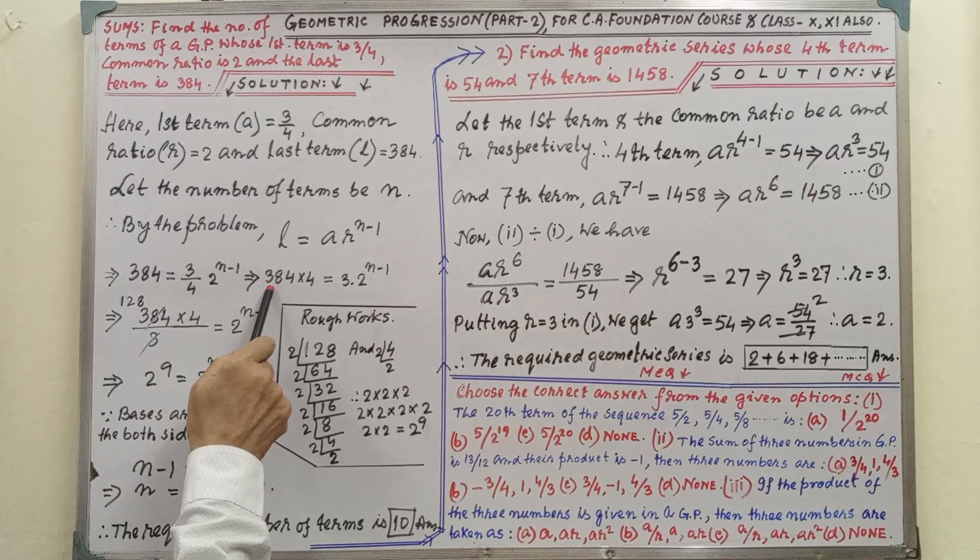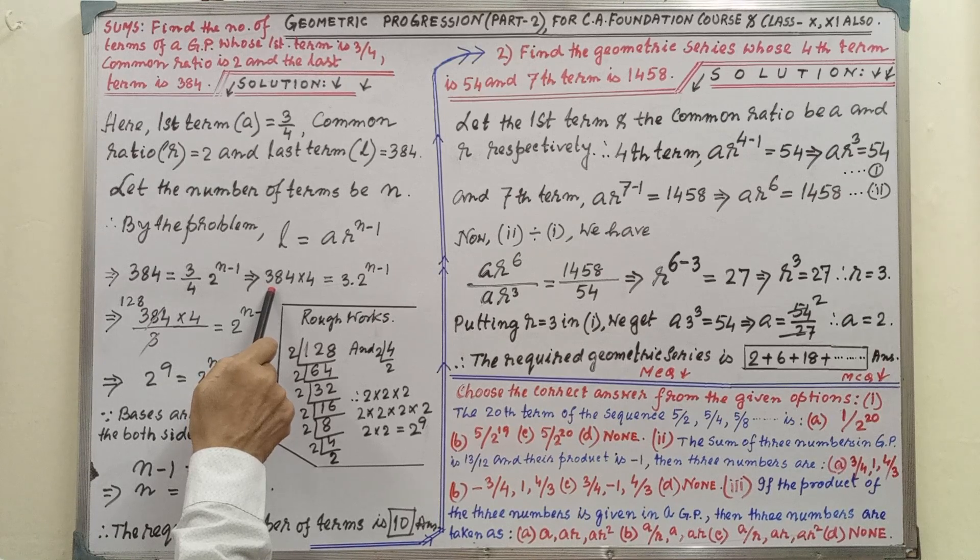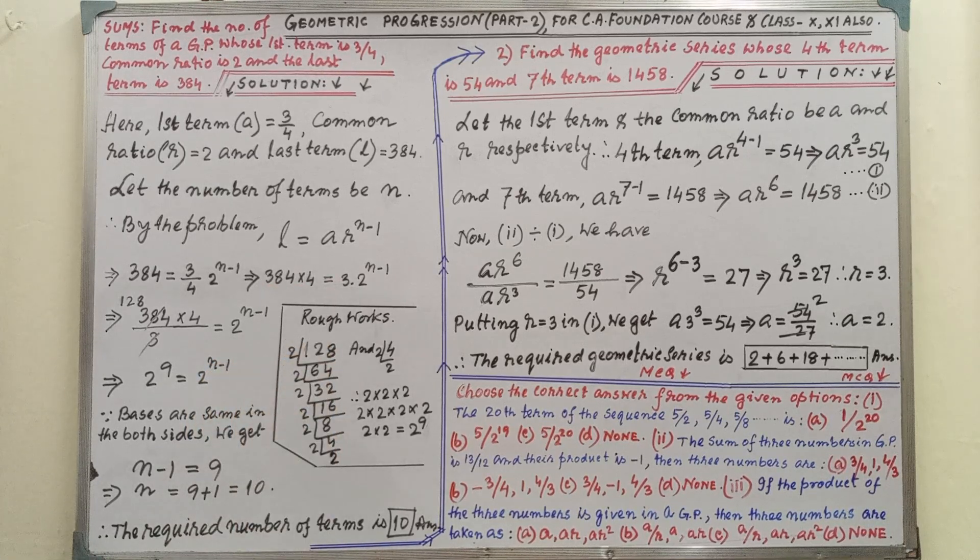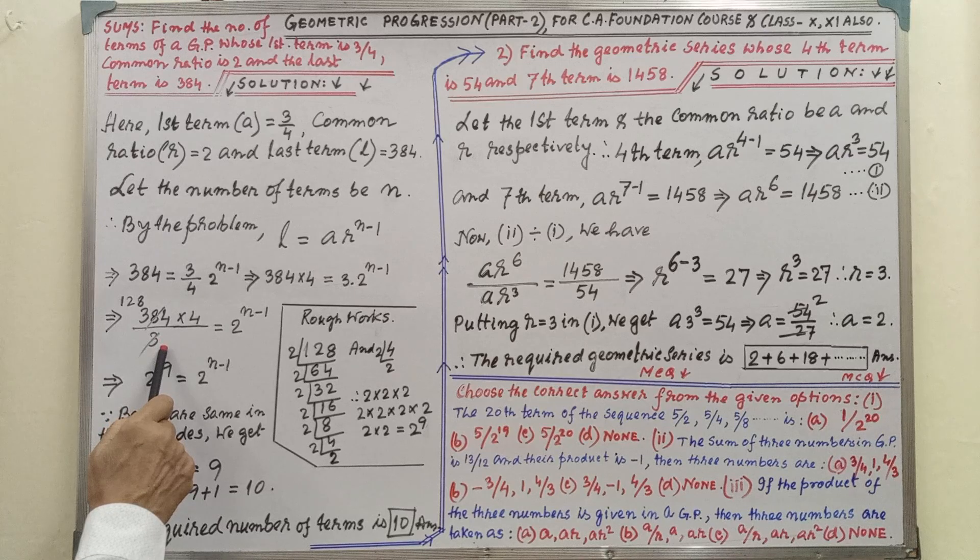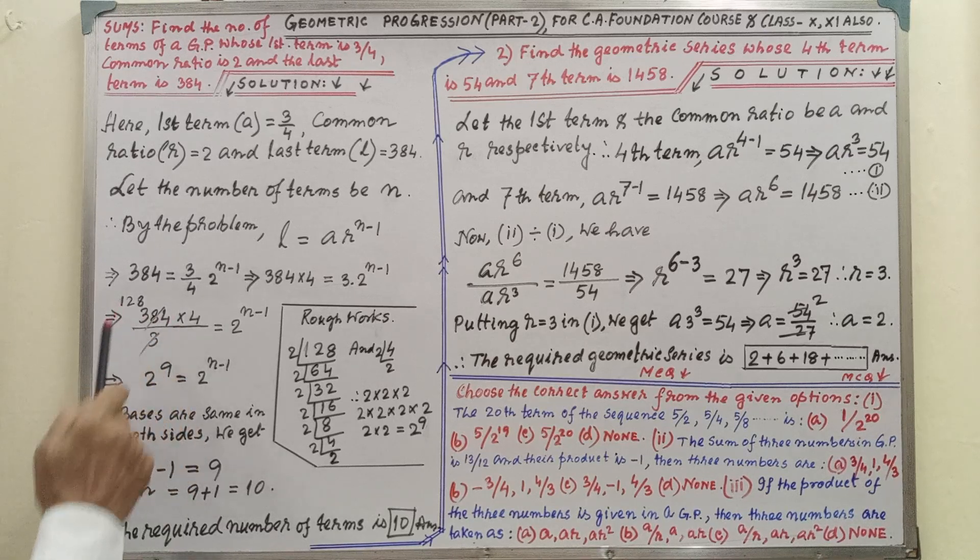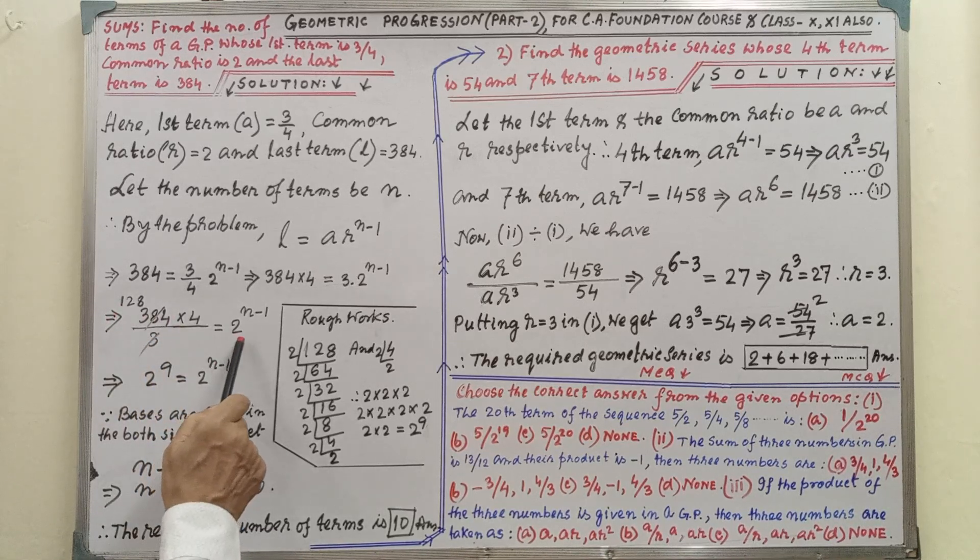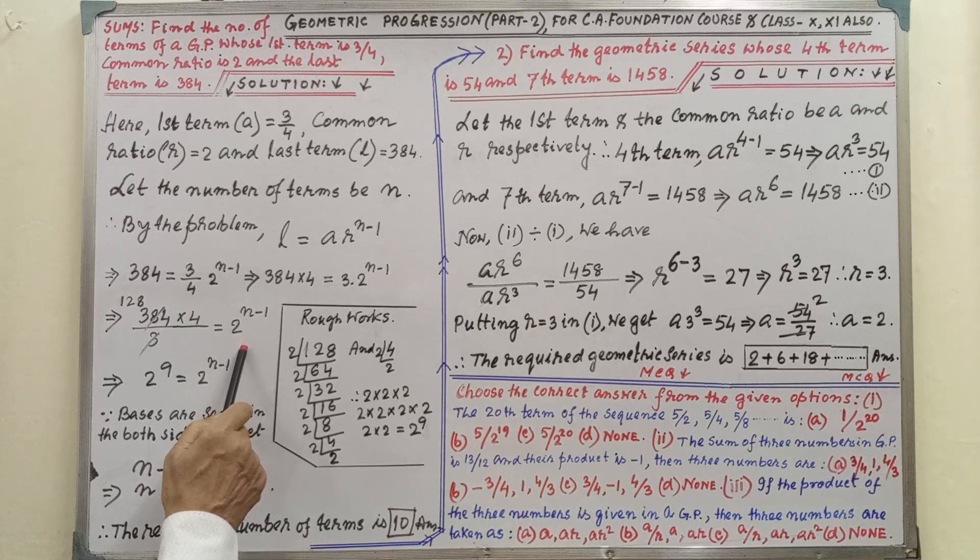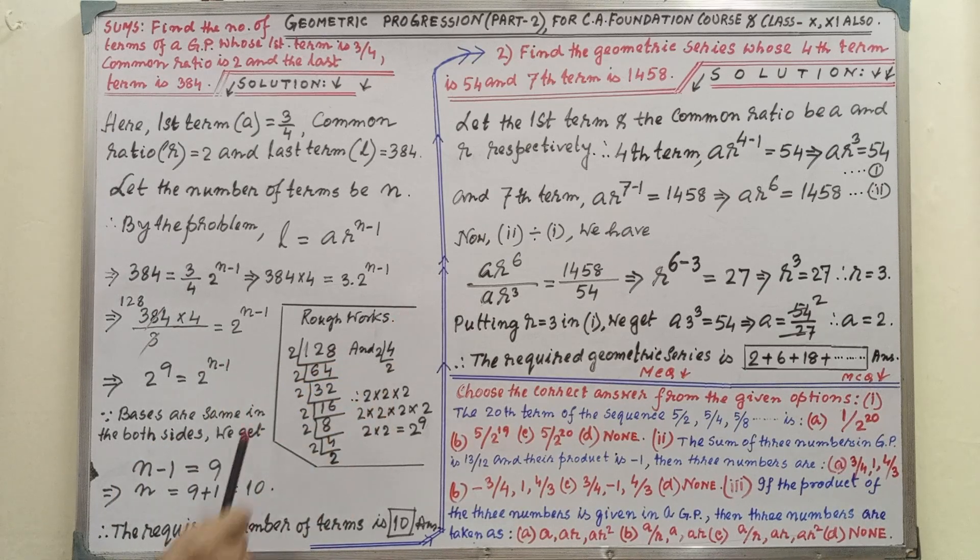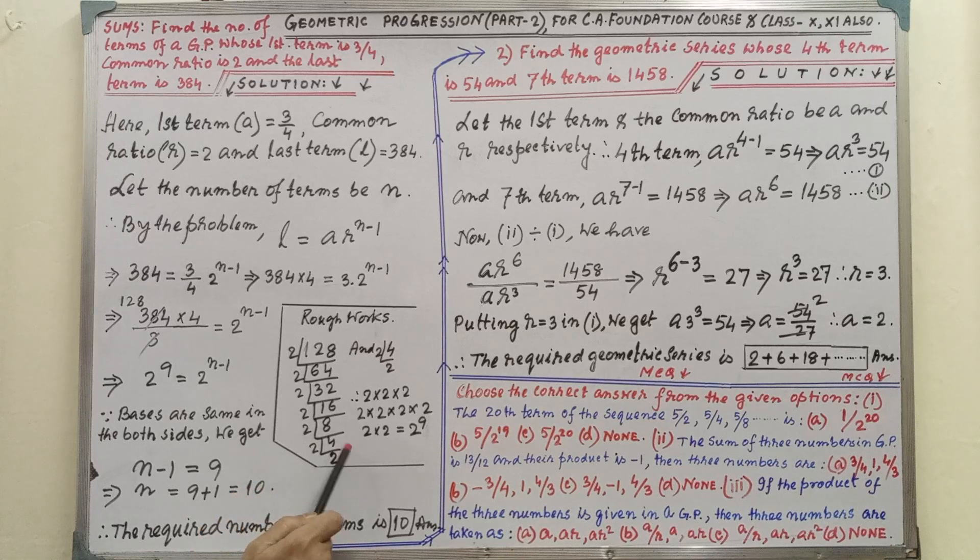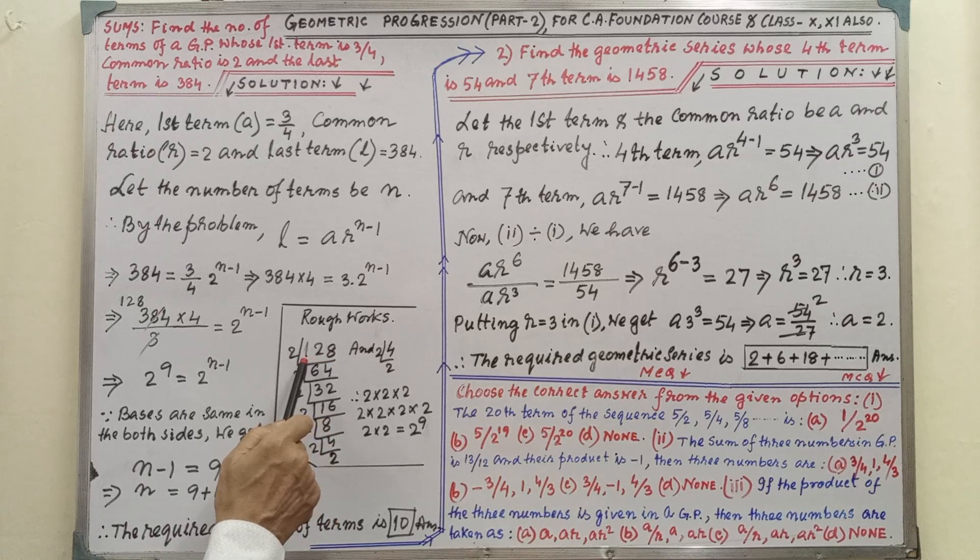Then by cross multiplication we are getting 384×4 = 3×2^(N-1). Now this 3 is coming right side to left side, so it will be divided. By cancellation it is coming 128×4 = 2^(N-1). How is this step coming? This rough work is needed. This part is not possible for solving mentally. This is why rough work on the right side here we have to show.